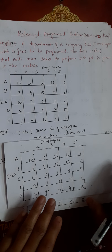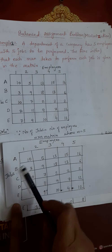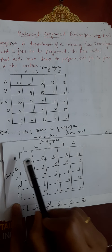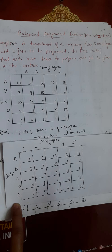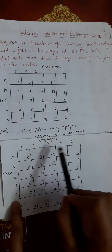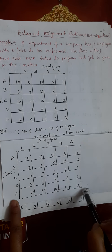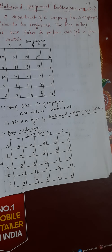Now our first step: the number of jobs is equal to the number of employees, therefore it is a balanced assignment problem. If it were an unbalanced assignment problem — meaning the number of jobs is not equal to the number of employees — then we would have to add a dummy row or dummy column to make it balanced.